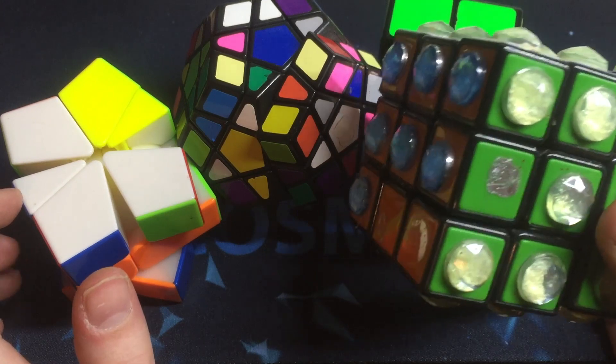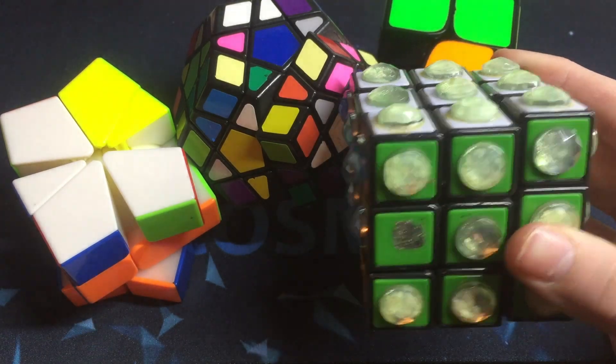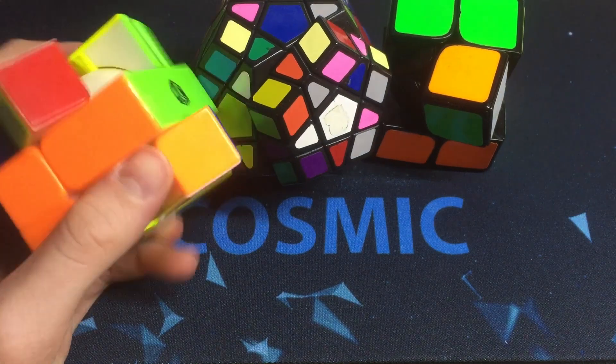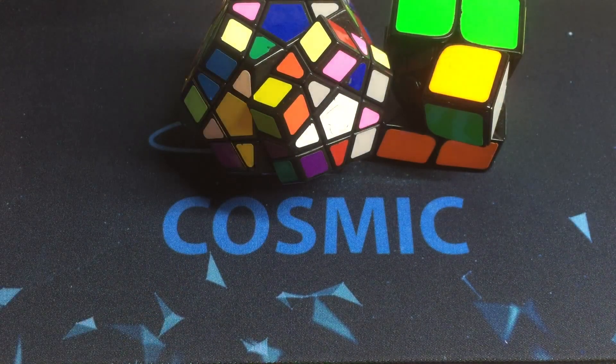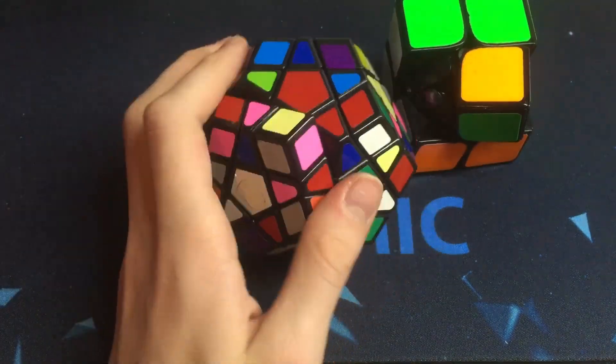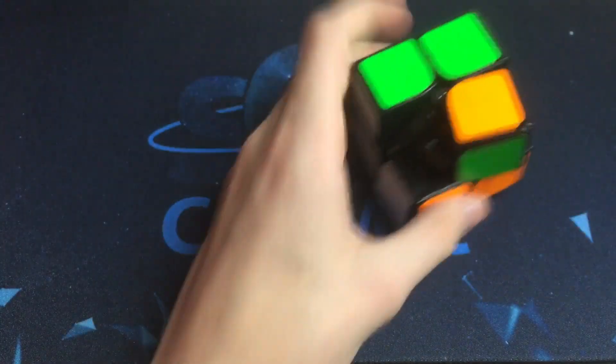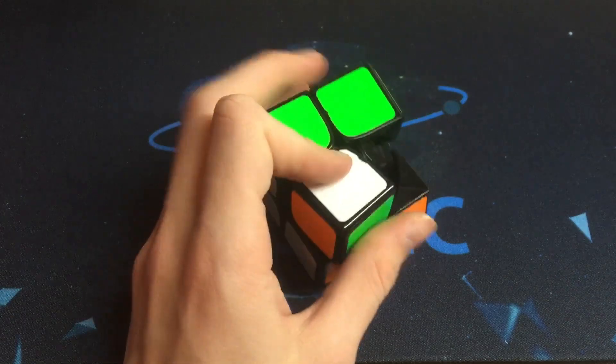This is the Skewby, or whatever you want to call it. I made it myself. This is a broken, or it was originally stripped then it broke, Square-1. This is a YJ Mega Morphix. I don't know why I didn't group this in the Mega Morphix category. And this is a new plastic Dayan that's broken.